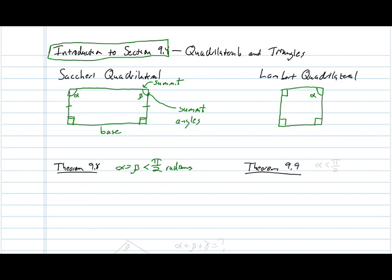And the fourth angle, which he intended to show was also a right angle, at least when you assume the characteristic postulate of hyperbolic geometry, turns out to be an acute angle. So, alpha, in this case, is less than π over two. That's what theorem 9.9 says.